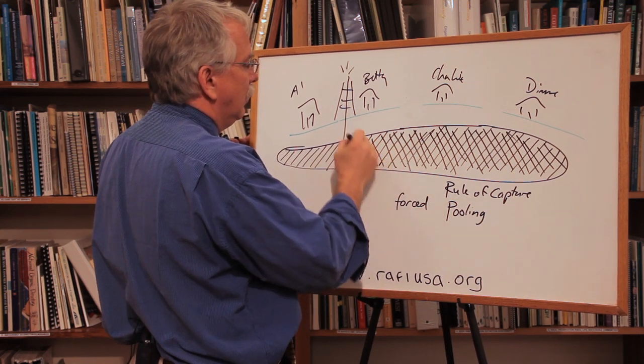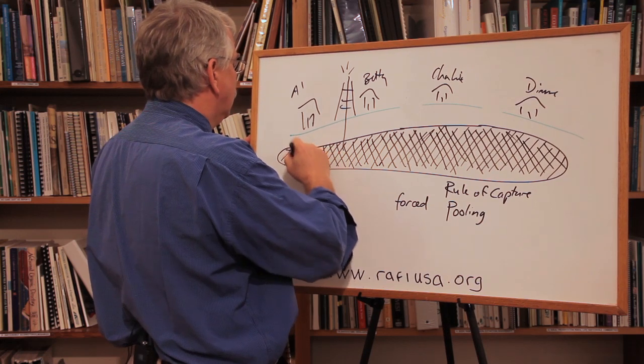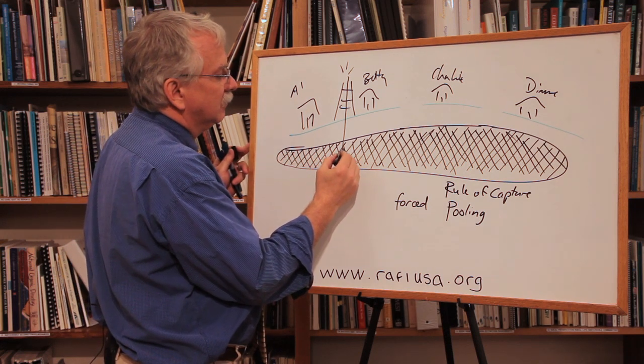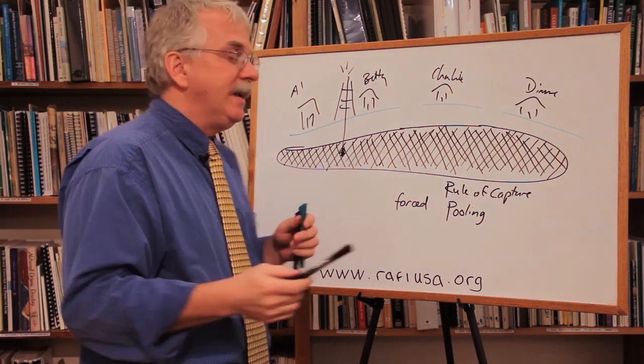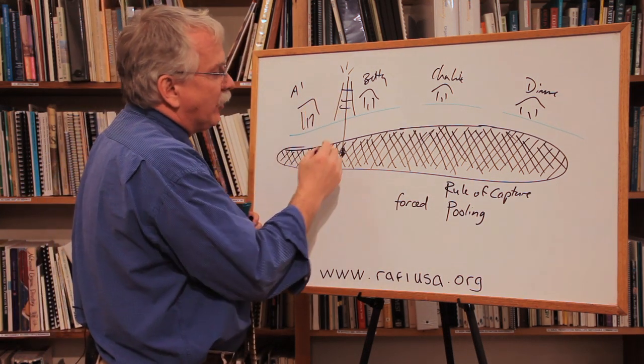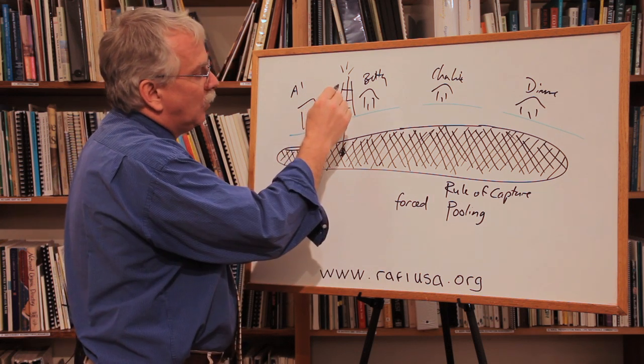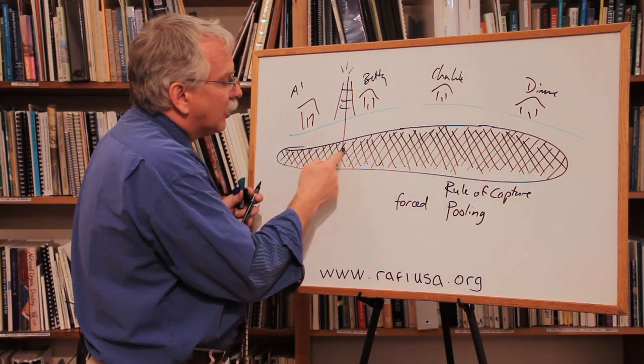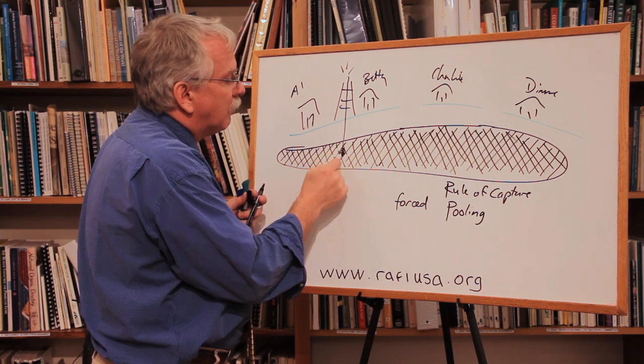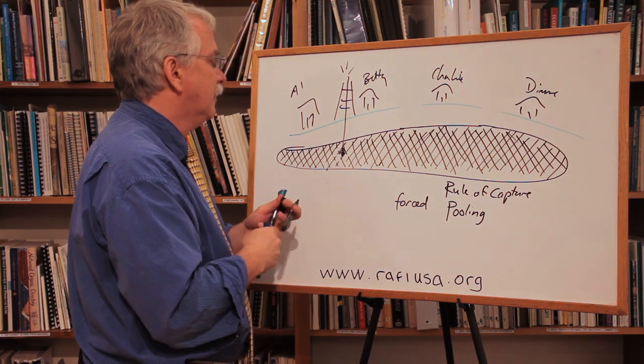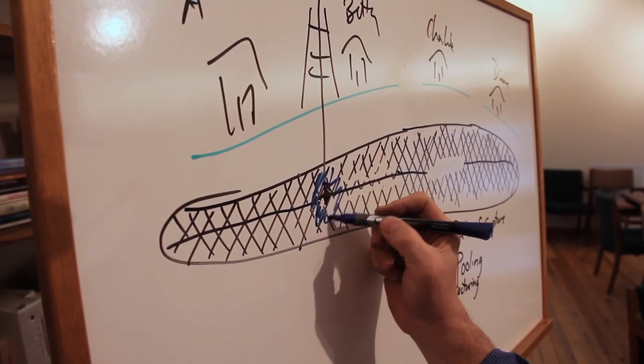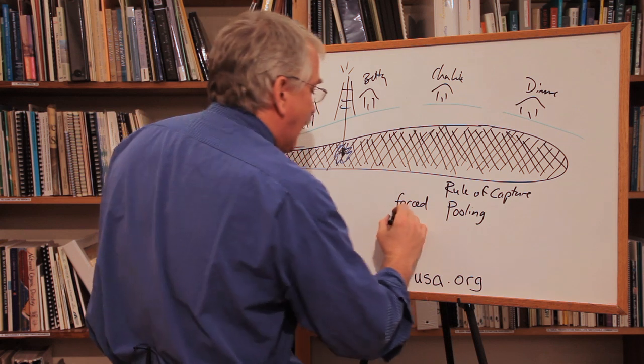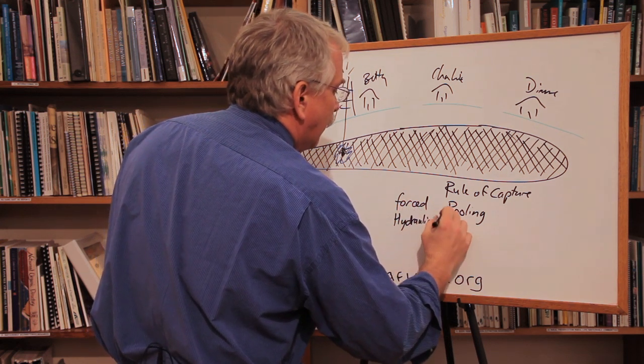So now, when Betty sticks in her straw, instead of pulling from the whole resource, what Betty gets is this little bit here. Well that doesn't work. So Betty goes back and takes, in order to break up this rock and release the gas, a liquid is pumped down in. And that liquid, under very high pressure, is used to crack this rock, to break it up. And now instead of just pulling from there, Betty's pulling from here. And because it is a liquid being used to break up, it is called hydraulic fracturing.